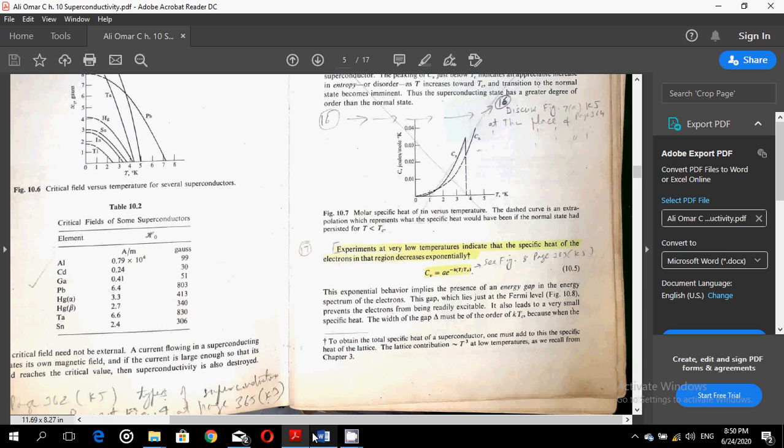Experiments at very low temperatures indicate that the specific heat of the electrons in that high region decreases exponentially. And the equation which can fit to this observation is given as equation 10.5: Cv is equal to some constant A exponential minus B into T over Tc. This exponential behavior implies the presence of an energy gap in the energy spectrum of the electrons. This gap, which lies just at the Fermi level, as you see in the next figure 10.8, prevents the electrons from being readily excitable.